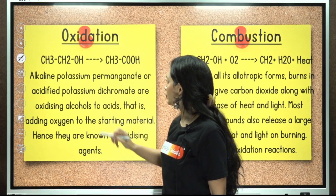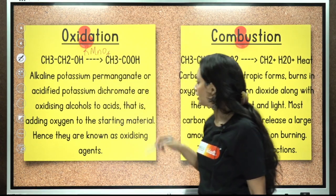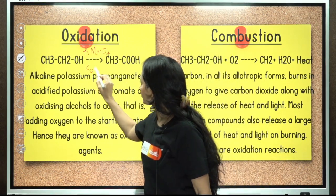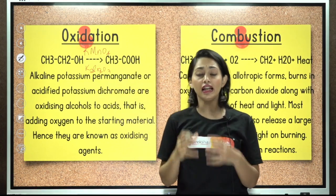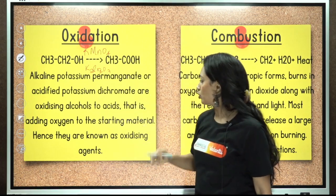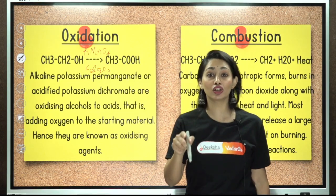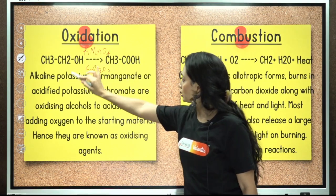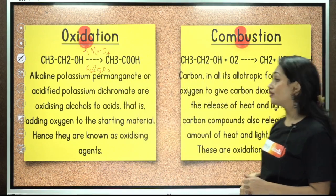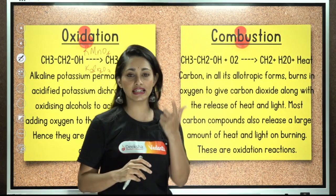Alkaline potassium permanganate (KMnO4) or acidified potassium dichromate (K2Cr2O7) are excellent oxidizing agents. In the presence of these, ethanol undergoes oxidation to give ethanoic acid. So ethanol is oxidized to ethanoic acid — this is an oxidation reaction.